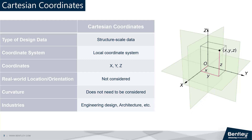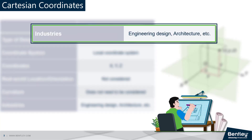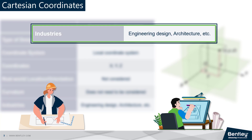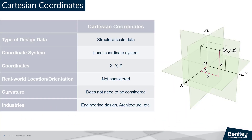Cartesian coordinates are commonly used for engineering and architectural design purposes, as they allow for precise and accurate placement of design elements. This is not to say that these disciplines do not use a geographic coordinate system. It just means that they can choose to be in a Cartesian coordinate system while being designed purely as design elements, and then be converted to a geographic coordinate system when the design is ready to be displayed in a bigger picture on the Earth.